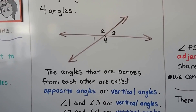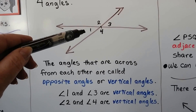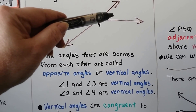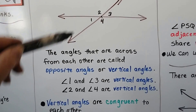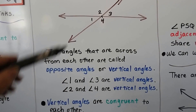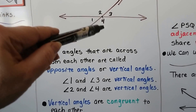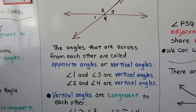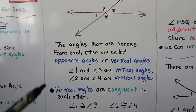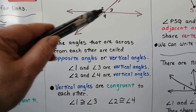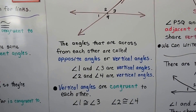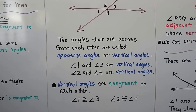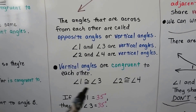We actually say vertical angles. Angle one is here, and the one opposite to it would be three — so angle one and angle three are vertical angles. Angle two and angle four are opposite of each other, so they're vertical angles. And vertical angles are congruent to each other, so whatever the measure of angle one is, that's what the measure of angle three will be.